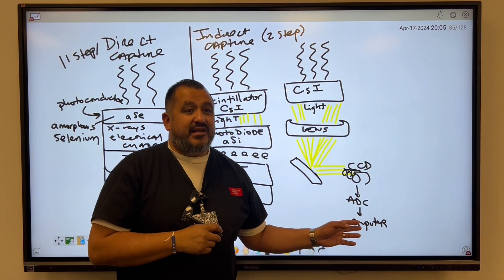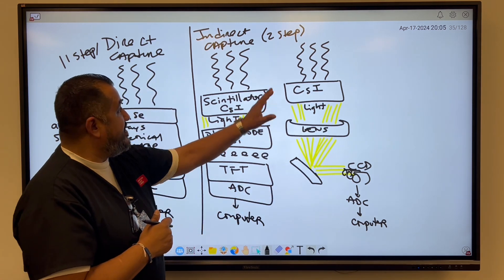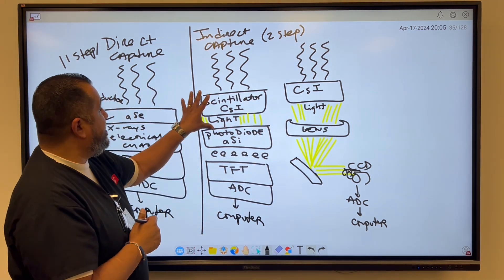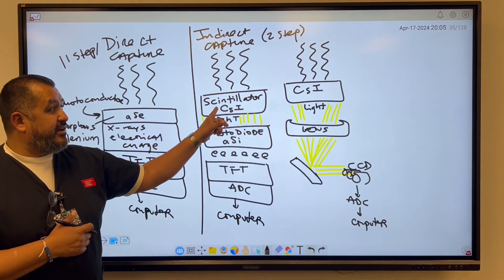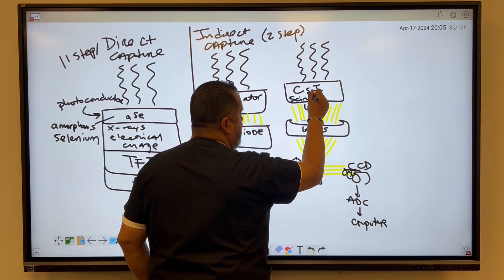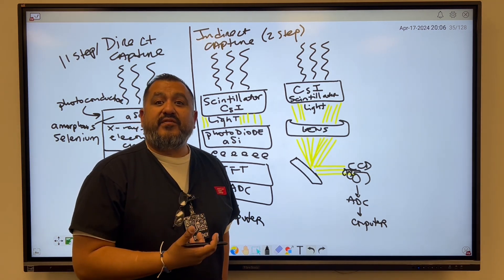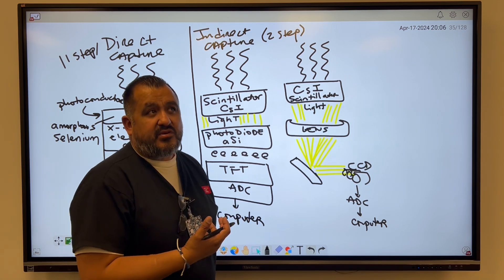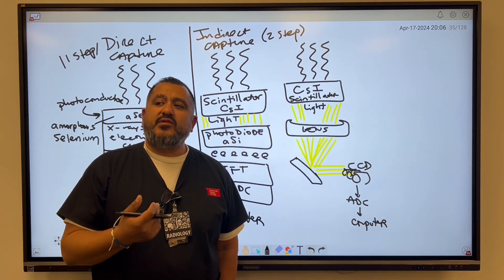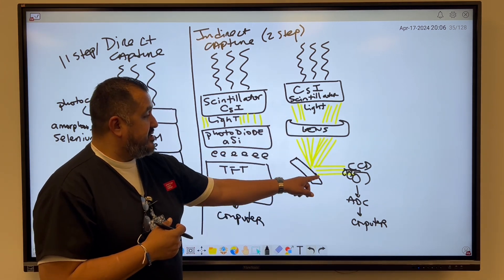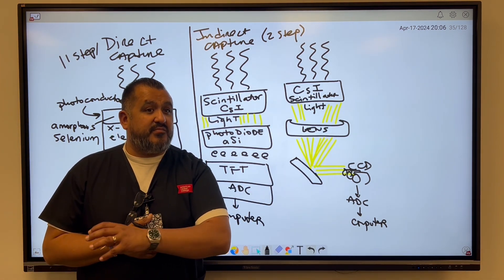The analog digital converter converts that analog signal into something the computer can read for processing. Everything here is using an ADC. This CCD system is indirect capture. TFTs can go either way — they can be direct capture or indirect capture. The only thing that makes them different is whether there's a scintillator involved — the cesium iodide is the scintillator. CCDs stand for charge coupled device: it's like a little camera that records the flash of light, and with the ADC converts that light into electrical charge that can be read by the computer.